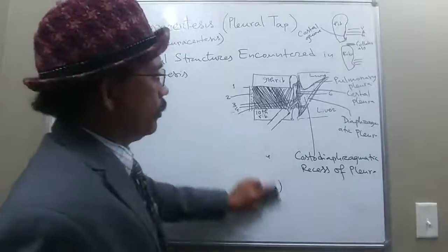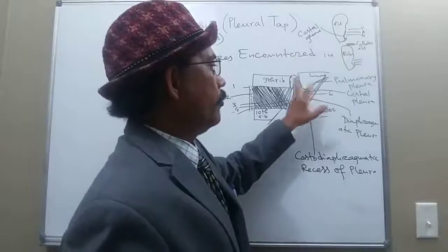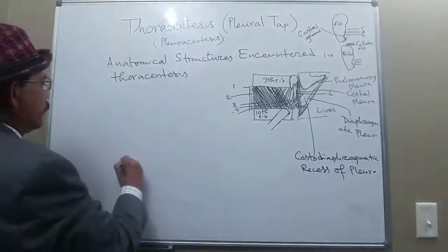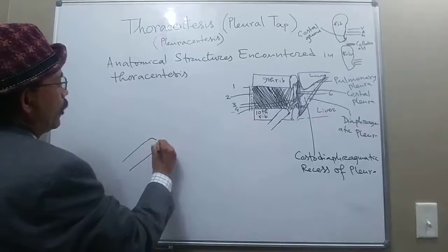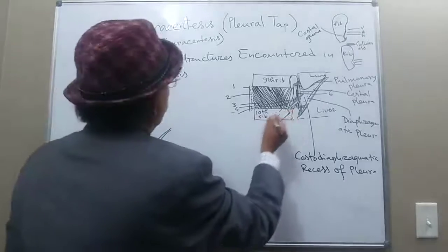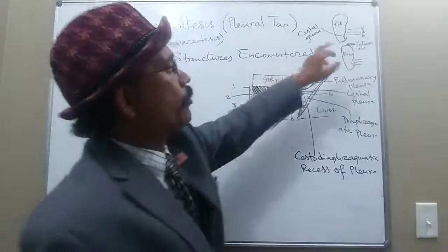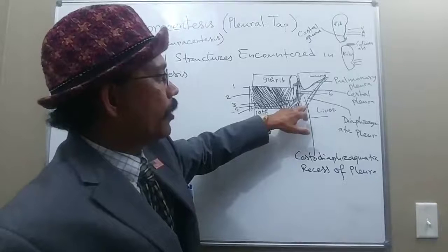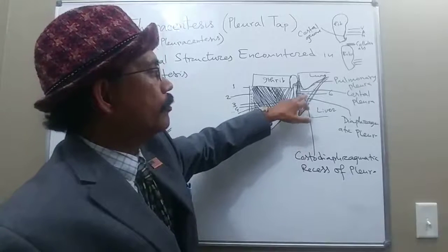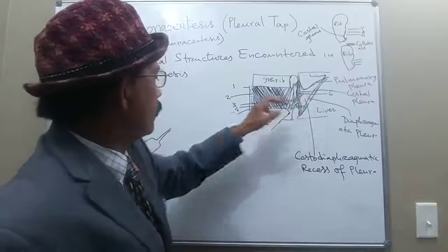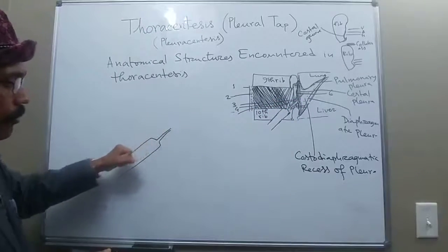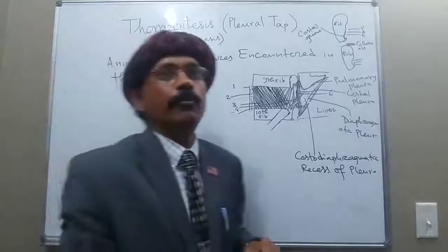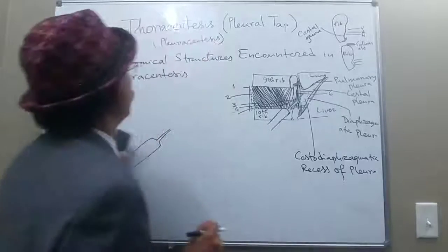We do not go to the visceral pleura or the lung. The needle should be directed obliquely upward, following the lower part of the intercostal space to protect the neurovascular bundle, but slightly superior to avoid damage to the collateral vessels. It passes into the costal diaphragmatic recess to draw fluid using a syringe.